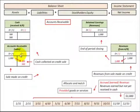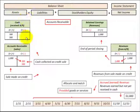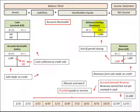In this presentation, we're going to look at accounts receivable, which is an asset on the balance sheet, and we're going to look at how it affects the cash account, which is also an asset on the balance sheet. We'll also look at how it affects revenues, which is part of net income on the income statement. And finally, revenues flow into retained earnings, which is a stockholders' equity account on the balance sheet.